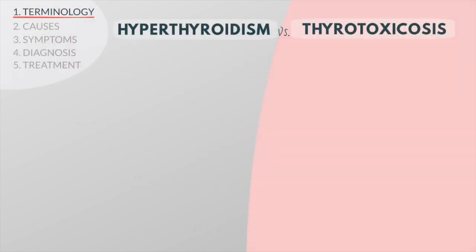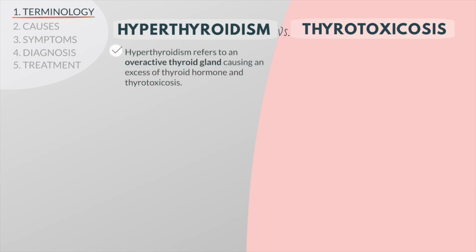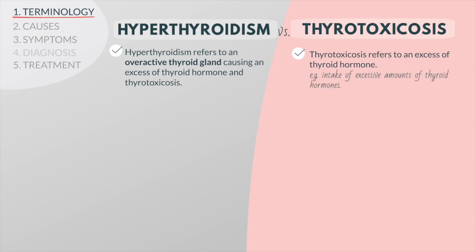Before starting this lecture it is important to first define some terminology. Hyperthyroidism refers to an overactive thyroid gland causing an excess of thyroid hormone and thyrotoxicosis. Thyrotoxicosis on the other hand refers to an excess of thyroid hormone but having an overactive thyroid gland is not a prerequisite. Thyrotoxicosis can for example be caused by an accidental intake of excessive amounts of thyroid hormones.